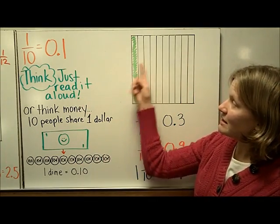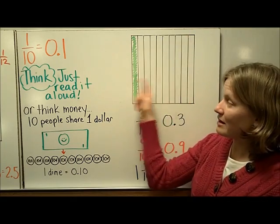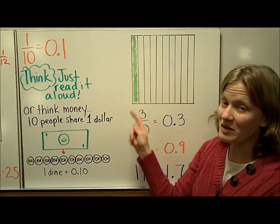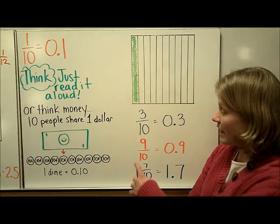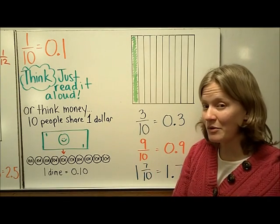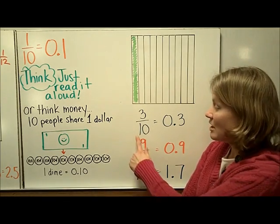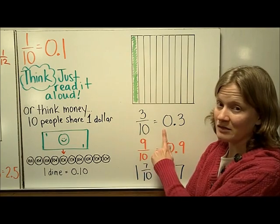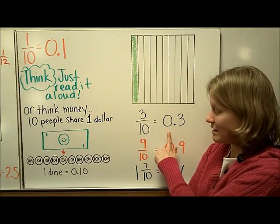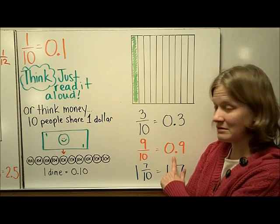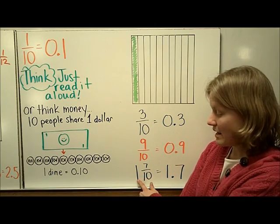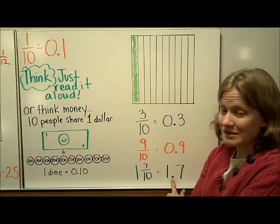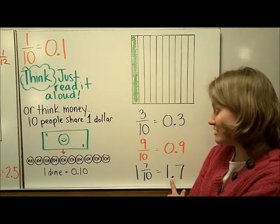Here you can see that the flat is divided into 10 pieces and we call one piece a 10th. And each of these you can just think about how we read them in decimals and fractions. 3 10ths, the fraction, reads the same as 3 10ths, the decimal. 9 10ths, 9 10ths. 1 and 7 10ths, we read it the exact same way in a decimal. 1 and 7 10ths.